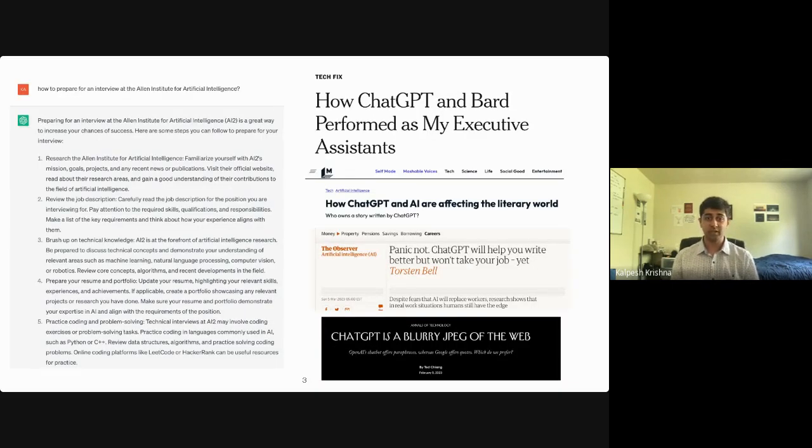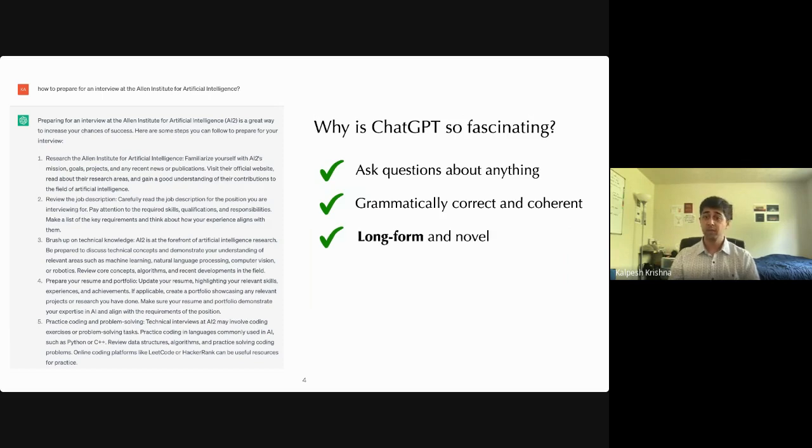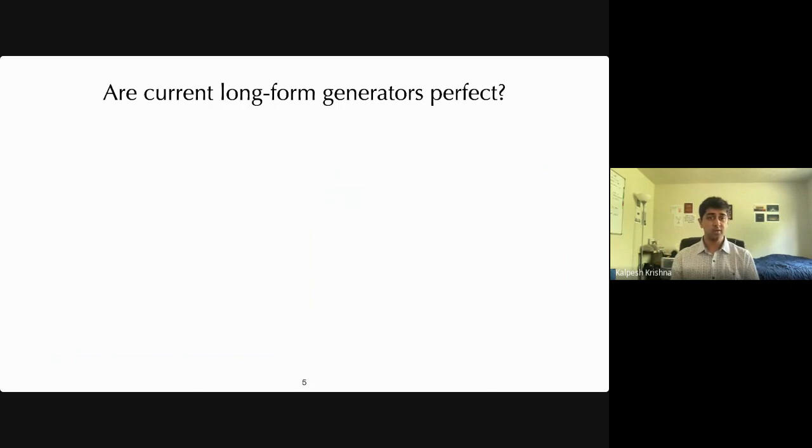So now we've all seen the success of chatbots like ChatGPT. It's literally all over the news channels. And it's the first time that AI ML tech is getting so much public interest from the media. This really begs the question, what makes these chatbots so fascinating? Well, first, you can ask it questions about anything and it provides you with reasonable looking answers. These generations are not only grammatically correct, but they're also coherent. But one of the most interesting things is that the generations are long form and novel. And this is quite unlike any AI system before this.